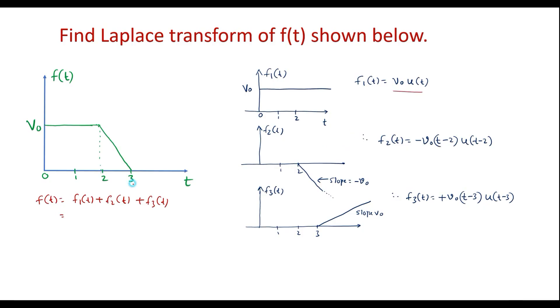f1 of t is nothing but v0 u of t minus v0 t minus 2 u of t minus 2 plus v0 t minus 3 u of t minus 3.